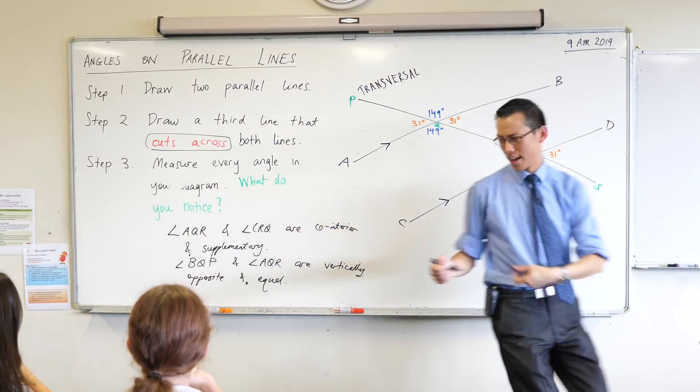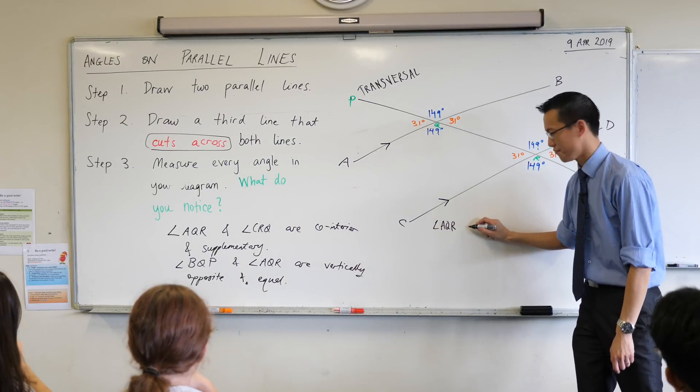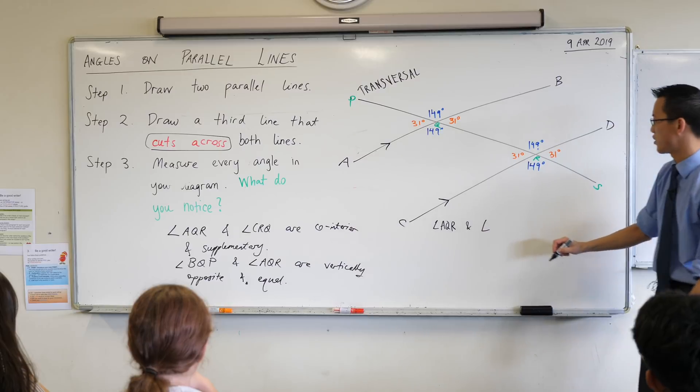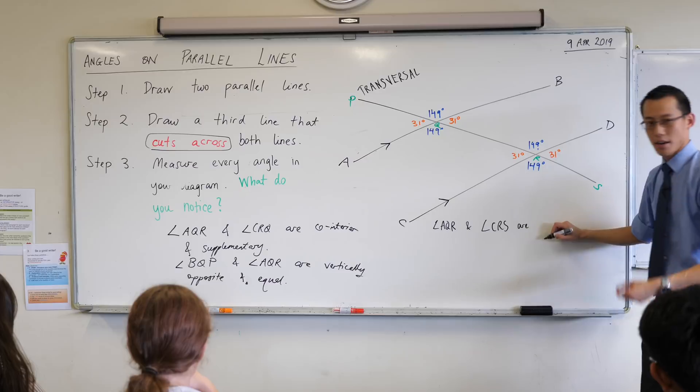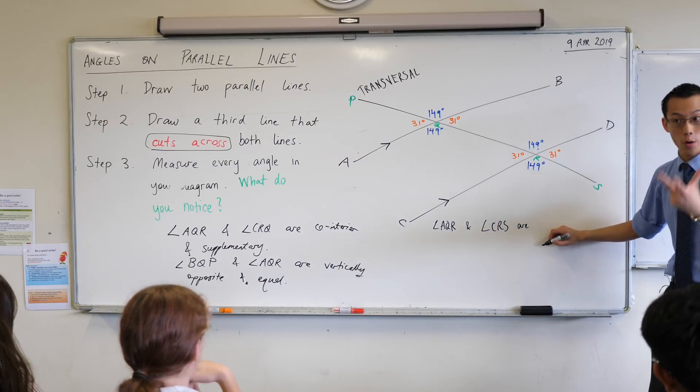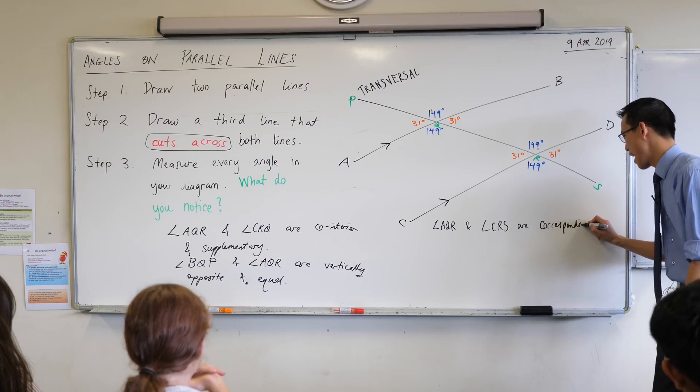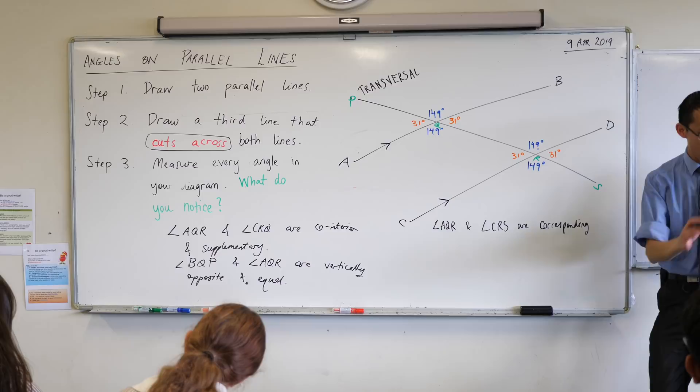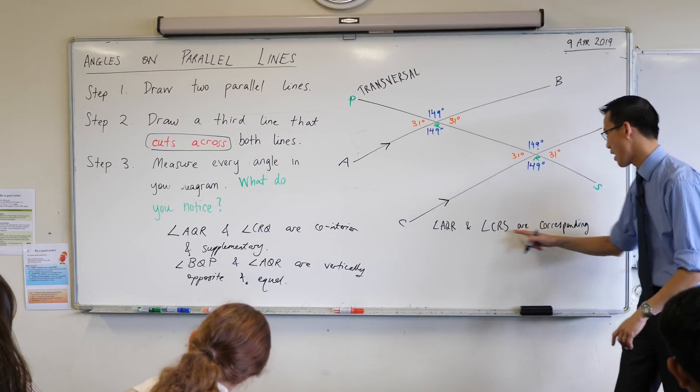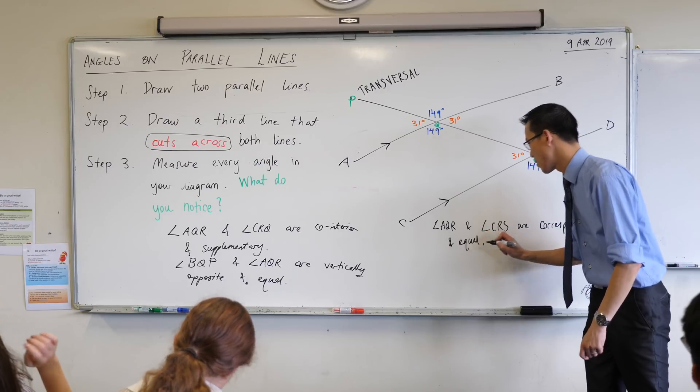Can we name those again? I'm going to write them down. I'm going to squeeze them over here. So I'm going to say AQR and angle, what did I just say? CRS? They are, that word that we just used was, corresponding. Corresponding. And what do you notice about the sizes of corresponding angles? They are the same, they are equal. So these are corresponding and equal, right?